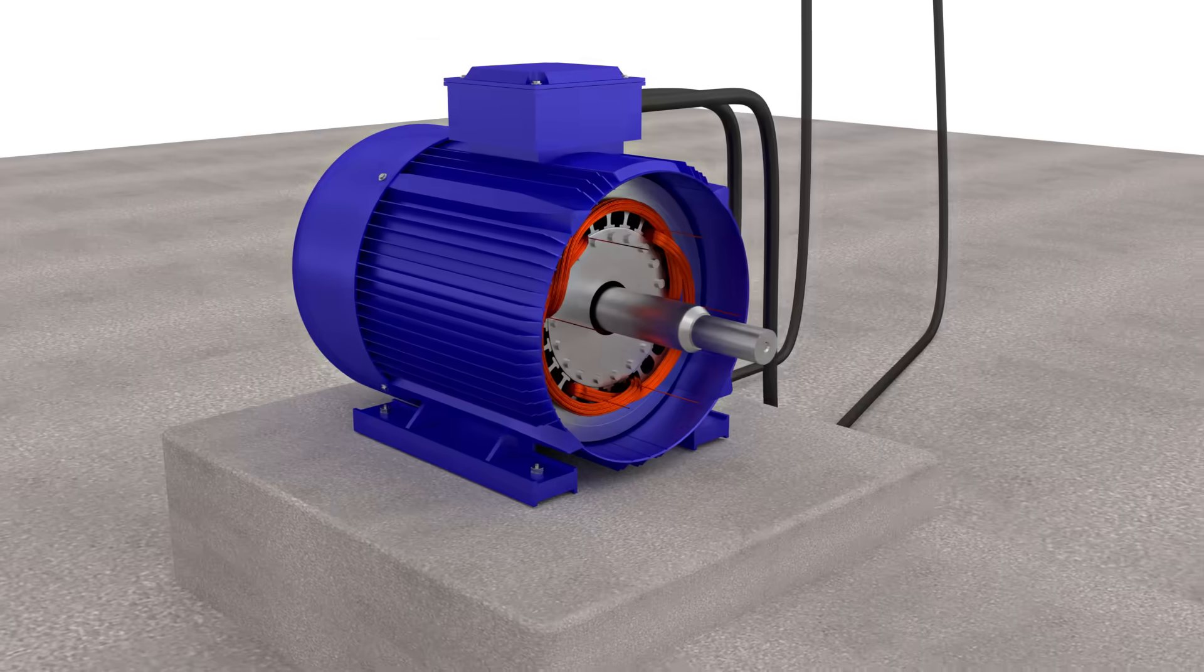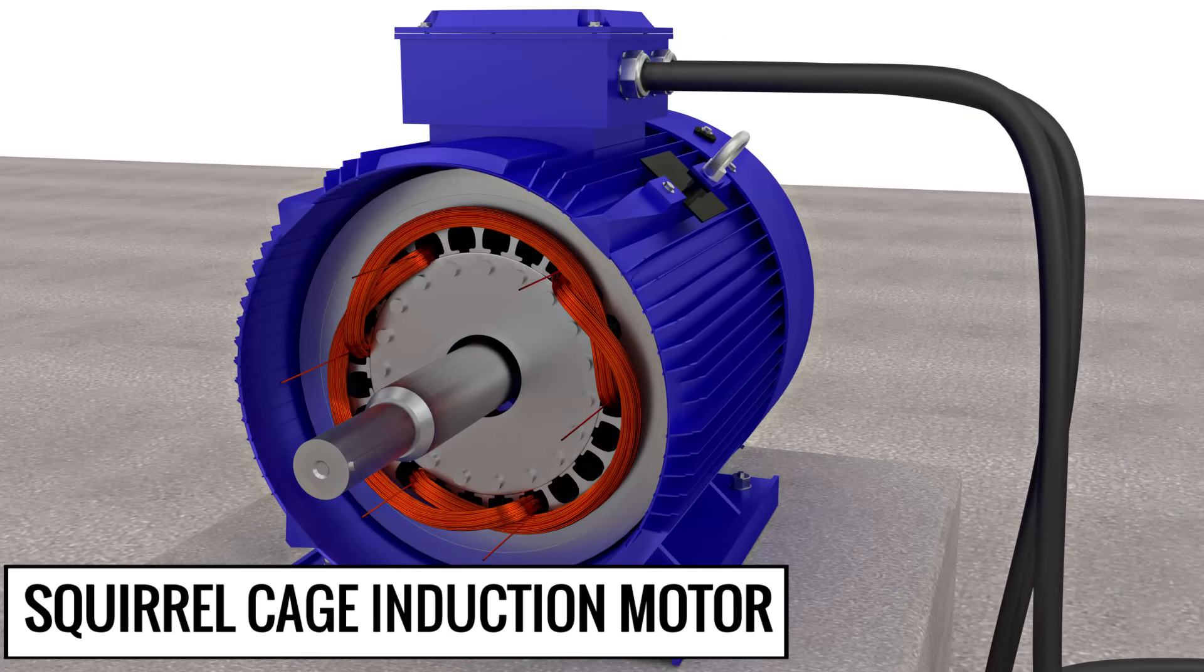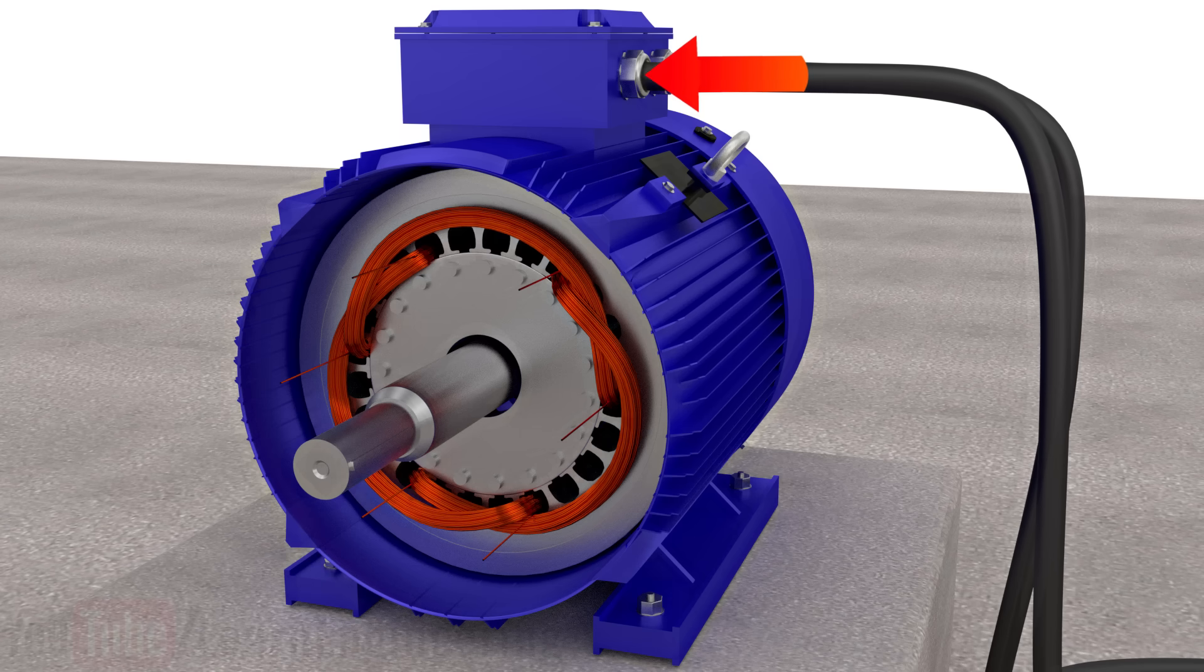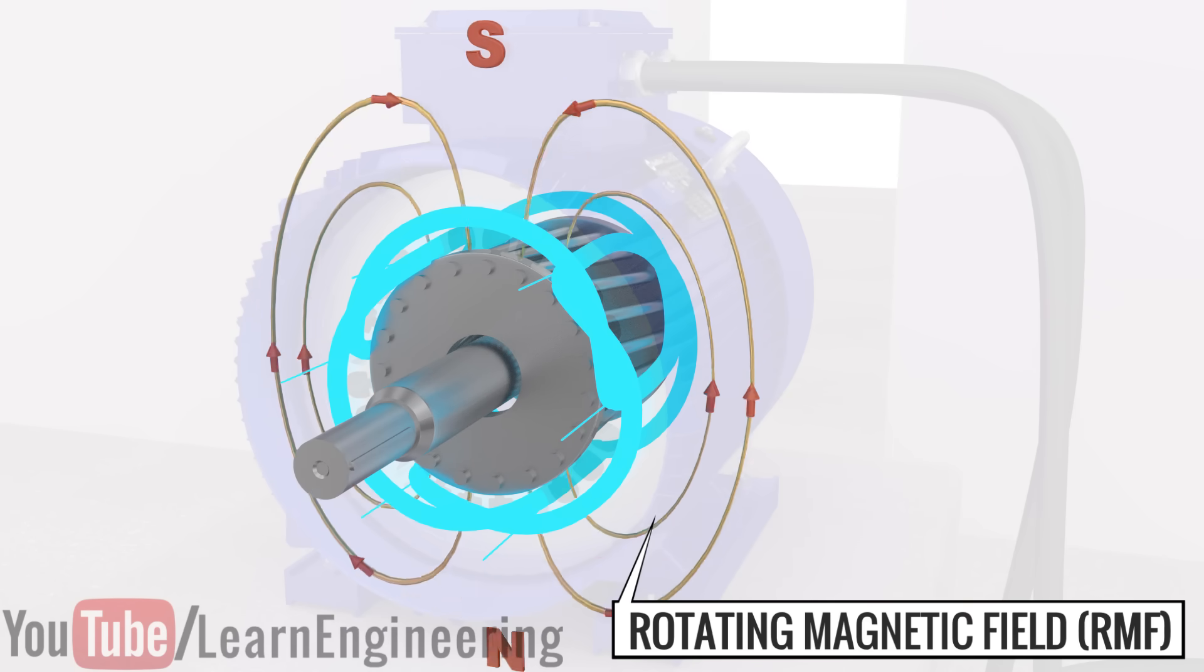First, let's have a look at the way a squirrel cage induction motor works. When a three-phase AC supply is connected to the stator winding, it produces a rotating magnetic field in the air gap between the stator and rotor.